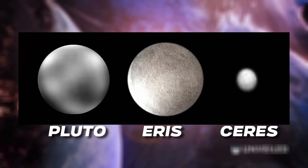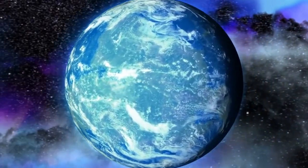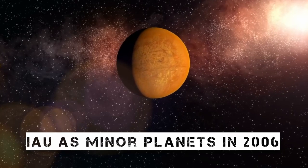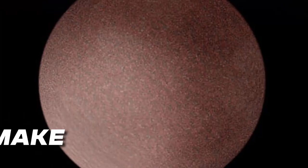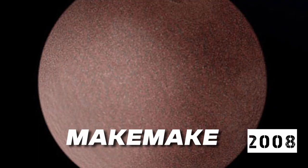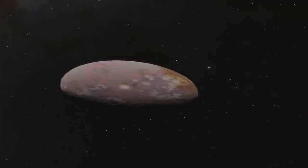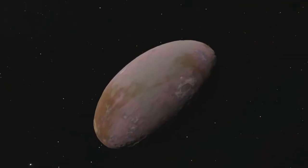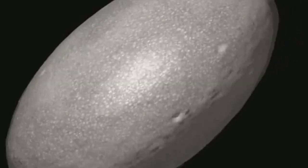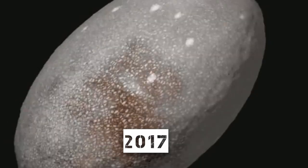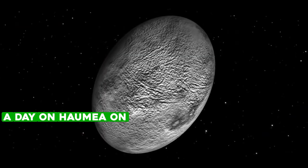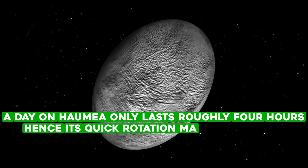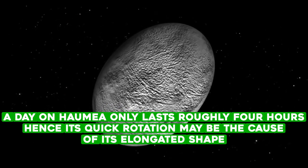Pluto, Eris and Ceres, the biggest asteroid, were consequently reclassified by the IAU as minor planets in 2006. In the Kuiper Belt, the dwarf planets Haumea and Makemake were also found in 2008. Now, astronomers are questioning whether Haumea still qualifies as a dwarf planet. Scientists discovered the object is more elongated than circular in 2017 when it passed between Earth and a bright star. One of the characteristics of a dwarf planet is roundness. A day on Haumea only lasts roughly 4 hours since its quick rotation may be the cause of its elongated shape.